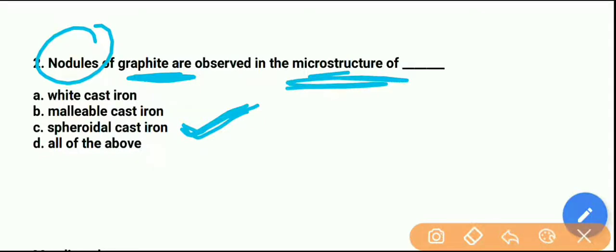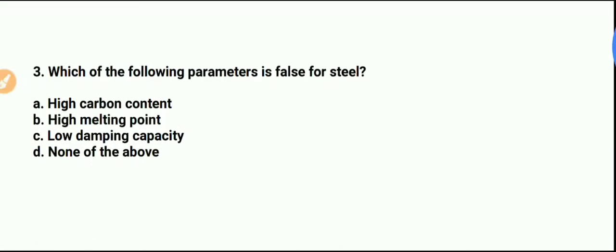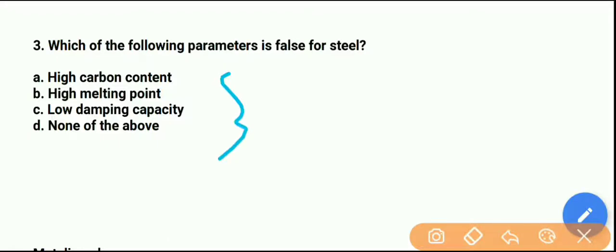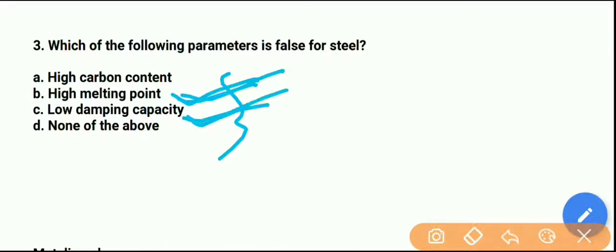Question number 3: Which of the following parameters is false for steel? Option A: high carbon content in steel. Option B: high melting point. Option C: and option D: none of the above. In steel, there is a high melting point and low damping capacity.